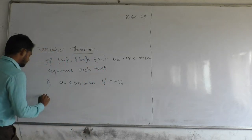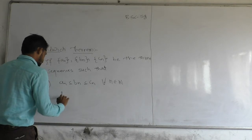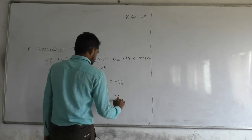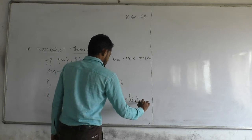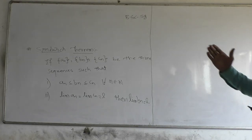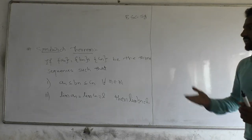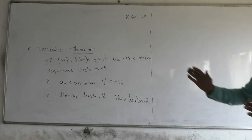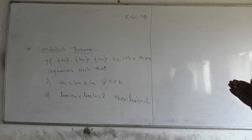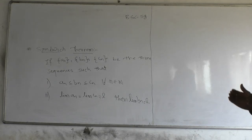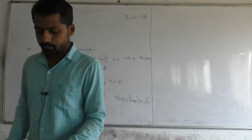The second condition is: given that the limit of A_N is equal to the limit of C_N, and both are equal to L, then we have to prove that the limit of B_N is also equal to L. So to understand the statement: sequence B lies between sequences A_N and C_N, and since the limit of both A_N and C_N equals L, we prove the limit of B_N is also L.